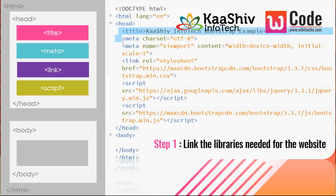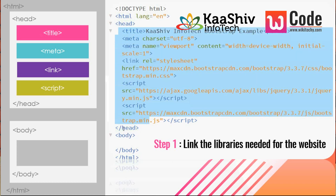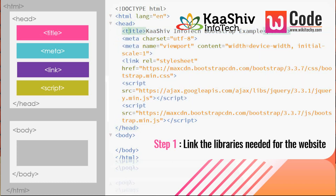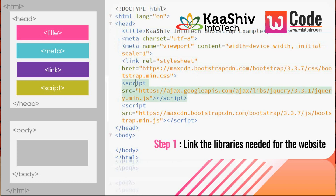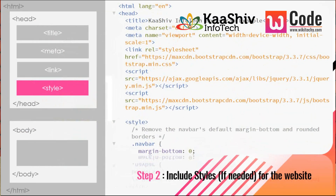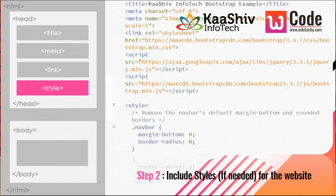The meta tag specifies the unicode text format and the viewport, which is an important meta tag. The viewport defines the width based on the device width. Once the libraries are added, any additional styles needed are added in the next step inside the head tag.